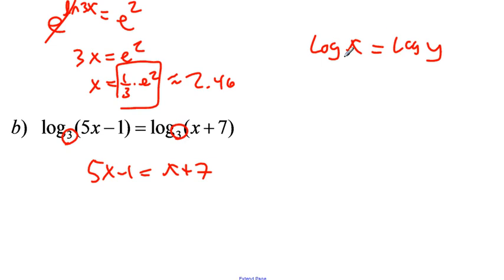If it's the same log, we learned in section 3.2 that those can just cross out, and we have X equals Y. So we're doing the one-to-one property. Those guys are gone, and now 5X minus 1 equals X plus 7.